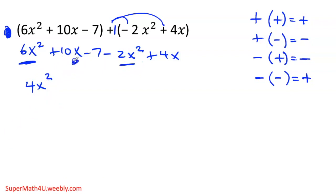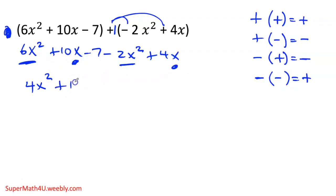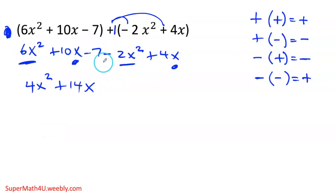Next, the x terms. I have an x here and an x there. 10 plus 4 gives me 14, and I keep the same variable, same exponent. The only thing remaining is the negative 7 — bring it down and that's the final answer.